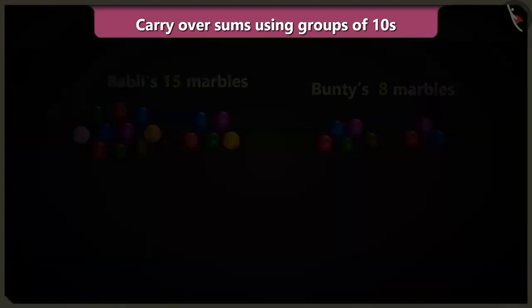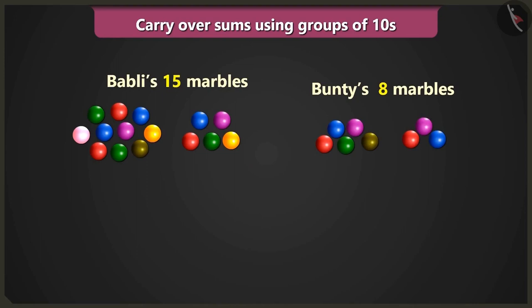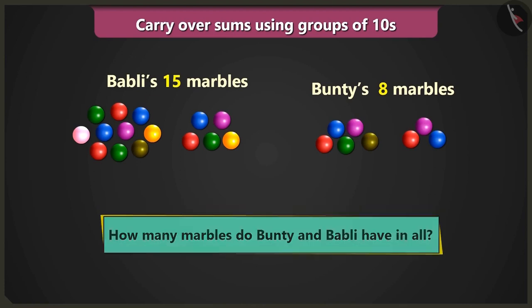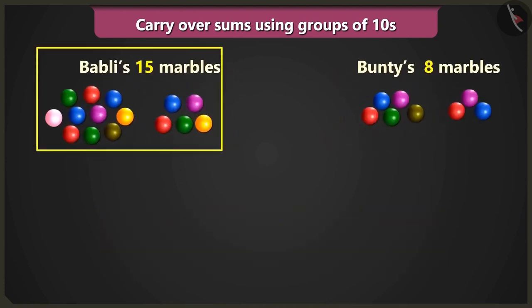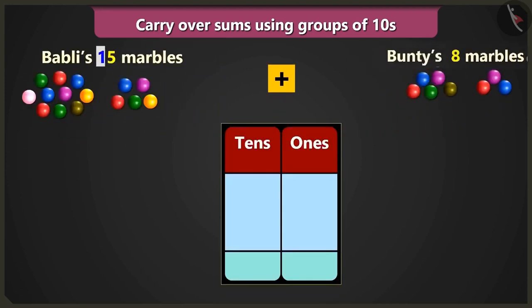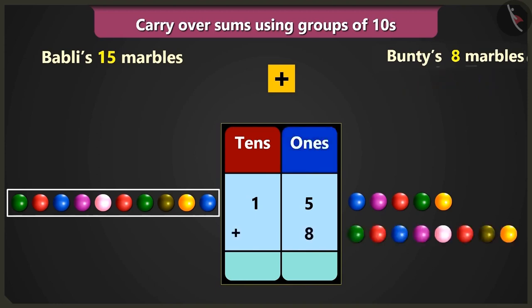When we went out to play, I had 15 marbles with me and you had 8 marbles. So how many marbles did we have earlier? Come on, let's add 15 and 8. I have 1 ten and 5 ones — you have 15 marbles. So we will write 1 in the box of tens and 5 in the box of ones. And you had 8 marbles, so we will write 8 in the box of ones.